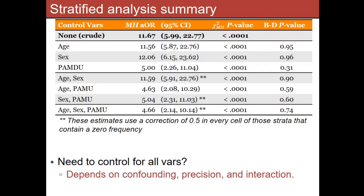One of the issues of stratified analysis is that when you start dicing up your data into strata, you can quickly run out of data. You start with 292 and then split two ways for sex and two ways for age, and now you have eight tables and maybe you have zero cells. These rows with issues are where we ran out of data. A little correction factor — putting 0.5 in a zero cell — lets us make the computation possible, but you're making it up. This is one of the limits of stratified analysis.